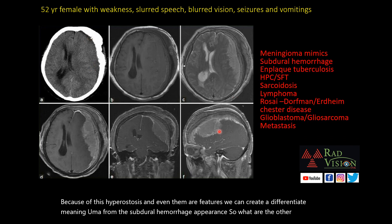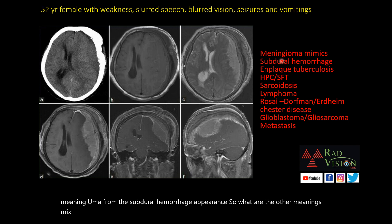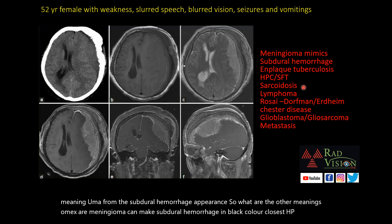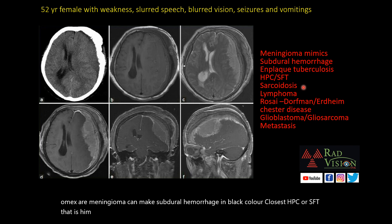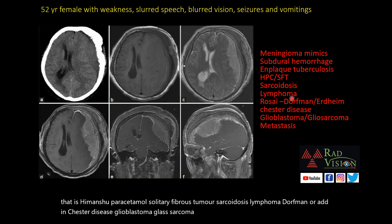What are the other meningioma mimics? Meningioma can mimic subdural hemorrhage, plaque tuberculosis, HPC or SFT (hemangiopericytoma or solitary fibrous tumor), sarcoidosis, lymphoma, Rosai-Dorfman or Erdheim-Chester disease, glioblastoma or gliosarcoma, and even metastasis.